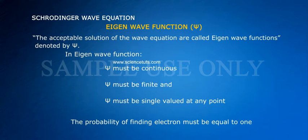Eigen wave function (ψ): The acceptable solution of the wave equation are called eigen wave functions denoted by ψ. In eigen wave function, ψ must be continuous, ψ must be finite, and ψ must be single valued at any point. The probability of finding electron must be equal to one.